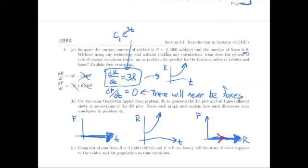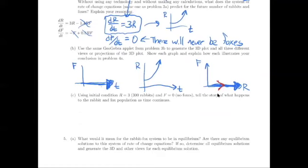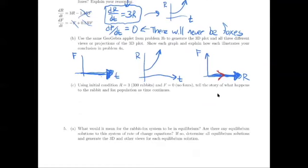When we look at R and F and lose sight of time, putting an arrow on the solution indicates what's happening as time goes on — so we still get to see how all three variables are interrelated. If there aren't any foxes, the rabbits have no predators and that population would continue to increase without bound, at least according to this model.